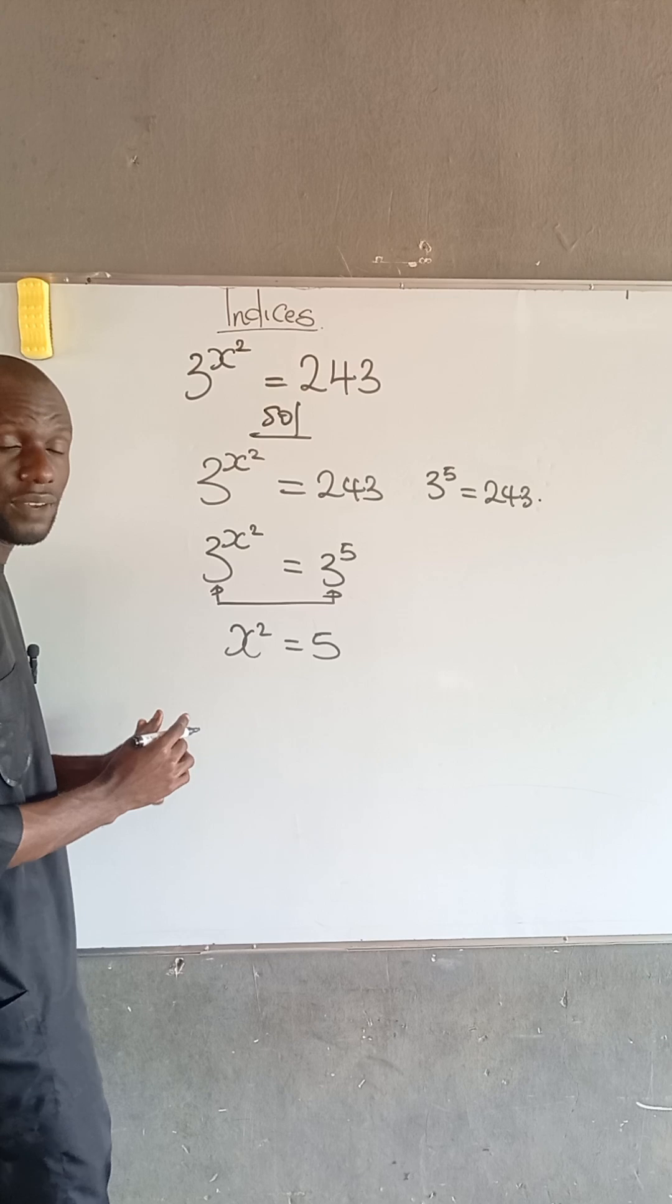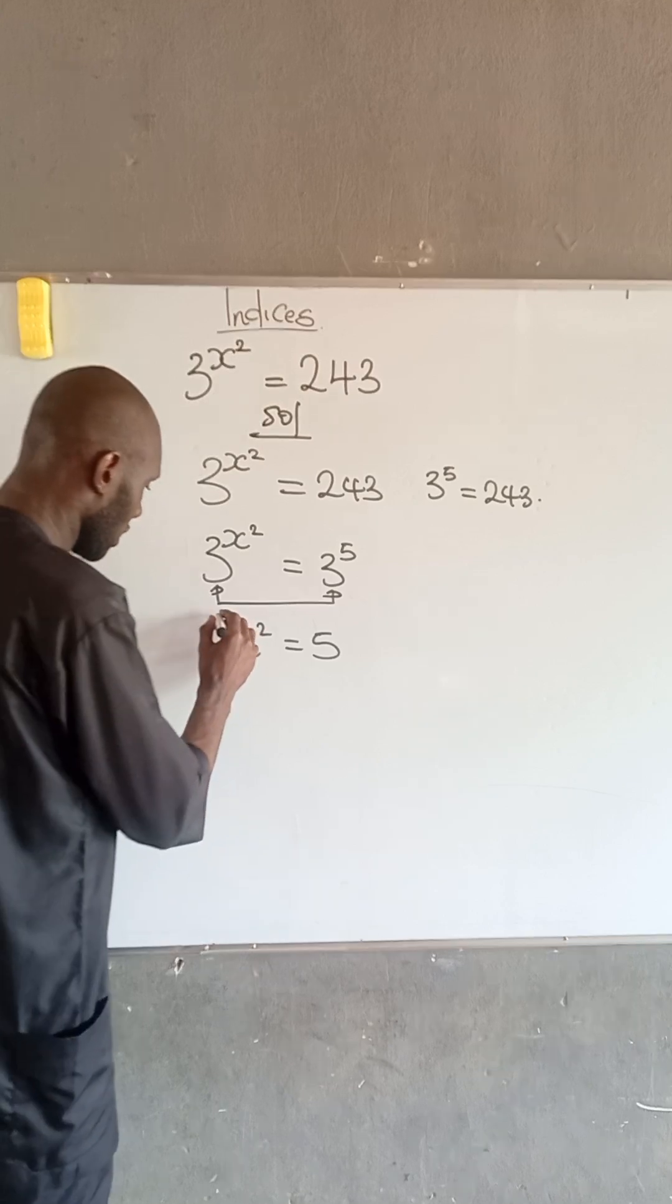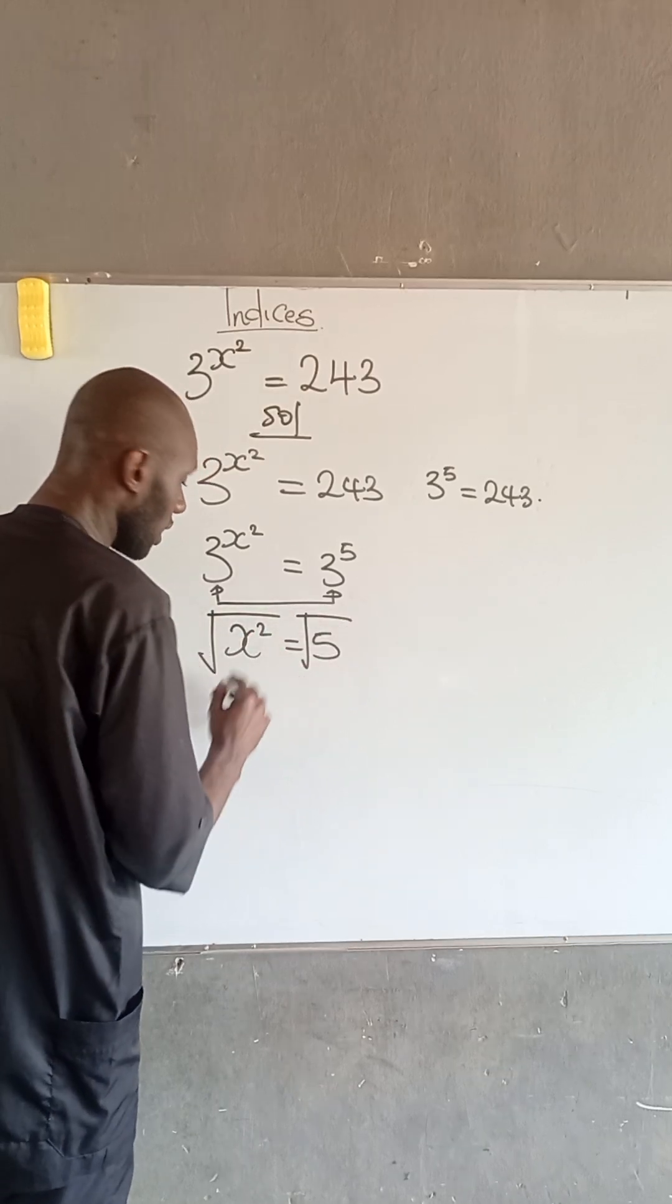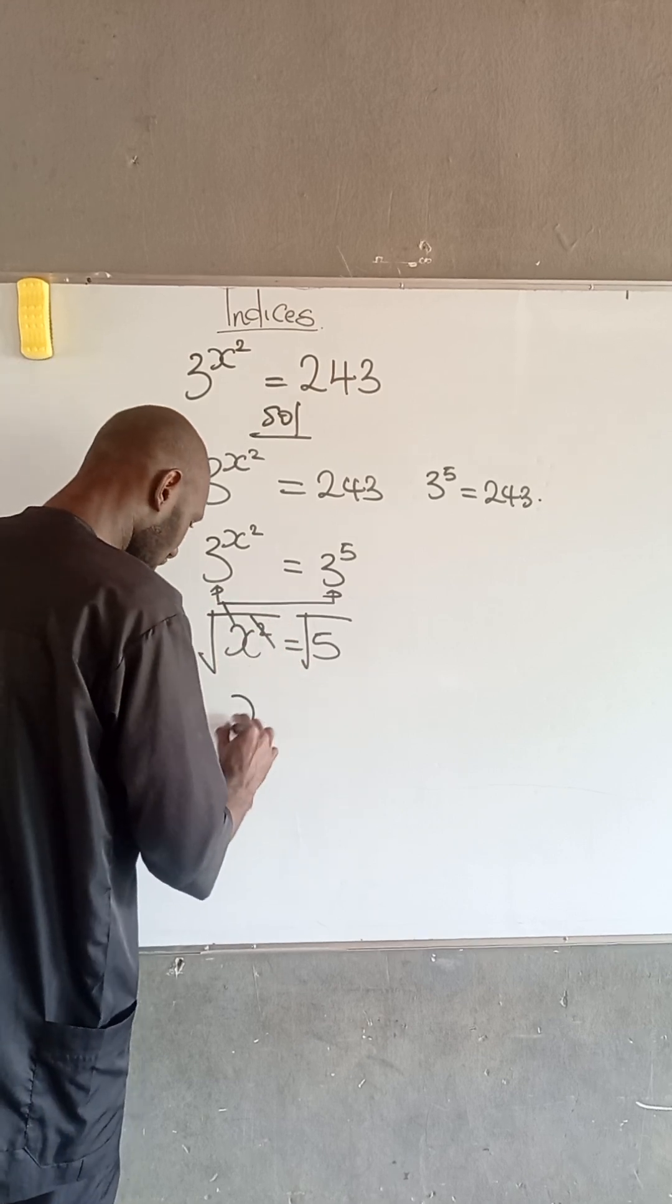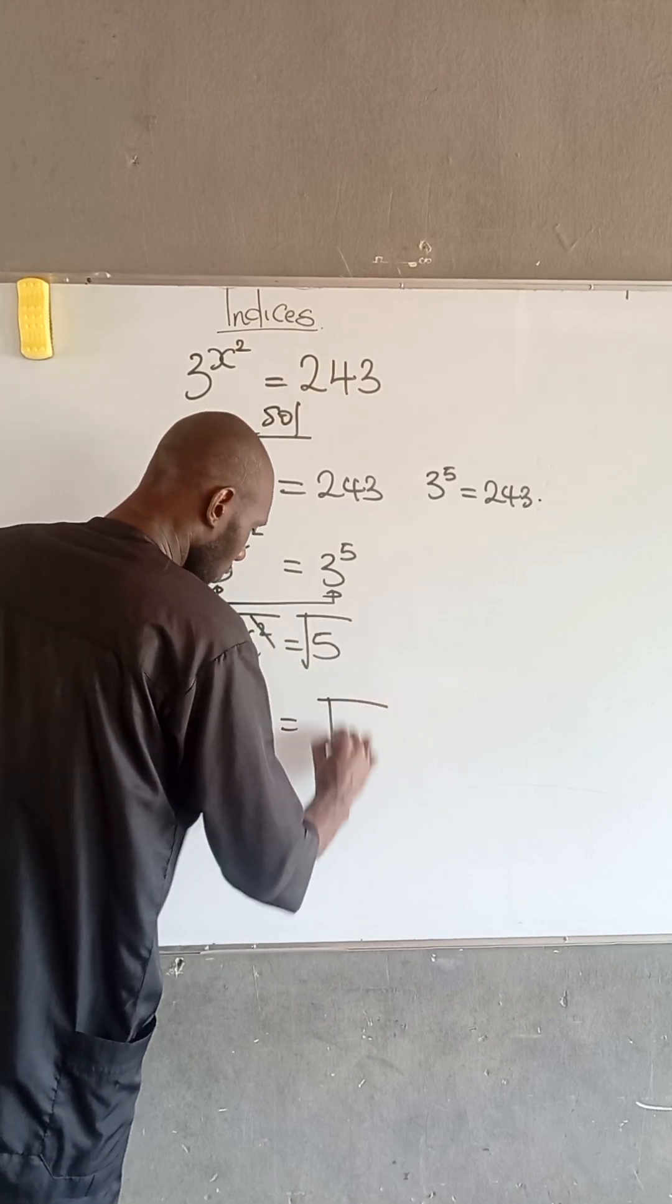Now, to obtain x, we have to take the root of both sides. So, we take the root of both sides. At this point, root will cancel that square. So, we have that x is equal to root of 5.